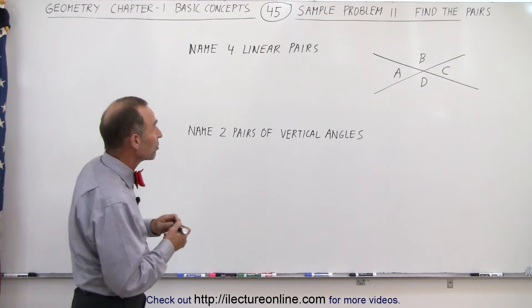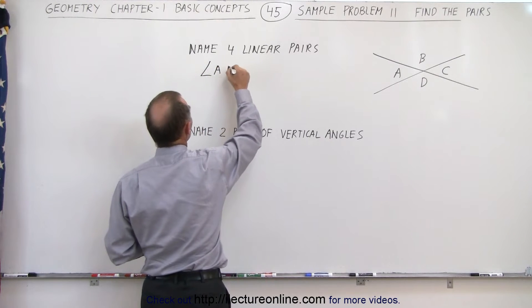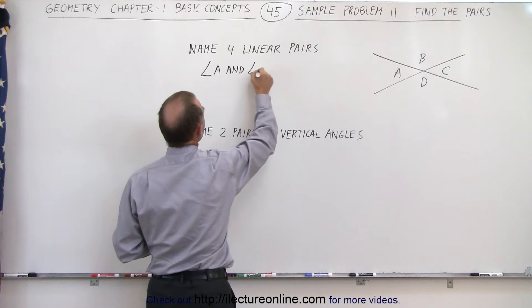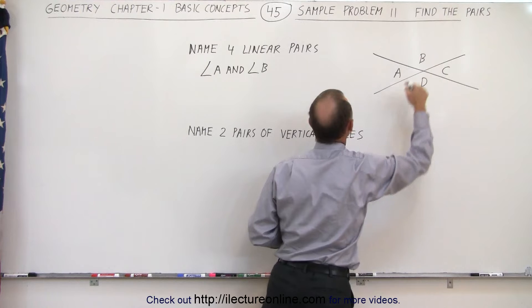So in this case the four linear pairs therefore are angle A and angle B because you can see that the measure of A plus the measure of B gives you 180 degrees.